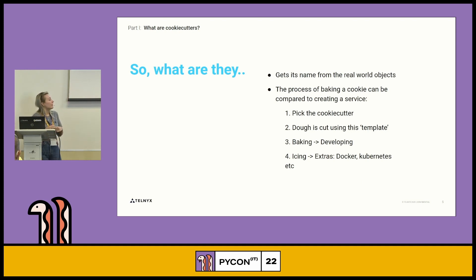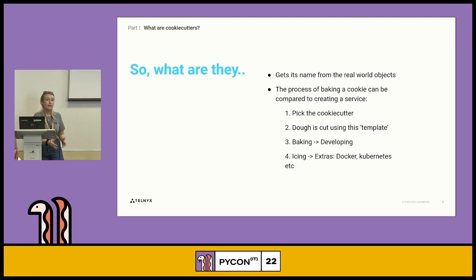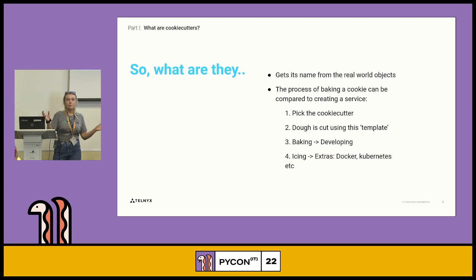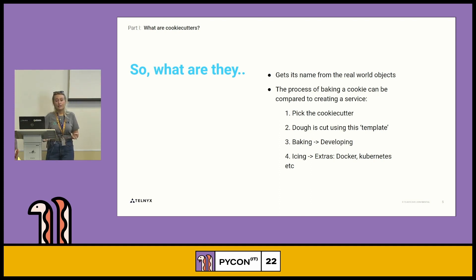Like a lot of things in software engineering, it gets its name from the real world. You can make a comparison between baking a cookie and creating a service. You pick the cookie cutter — there are lots of different shapes, like gingerbread man, square, circle, whatever you want. Once you pick that, you cut the dough using that template or cookie cutter. Then the baking could be compared as an analogy to the developing, and the extras are things like Kubernetes, Docker, et cetera.